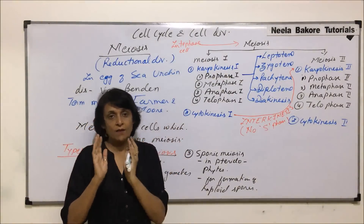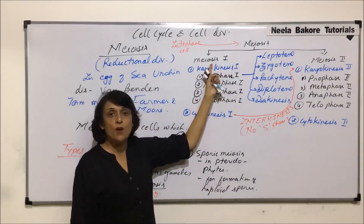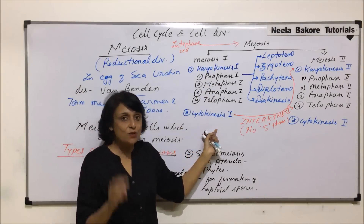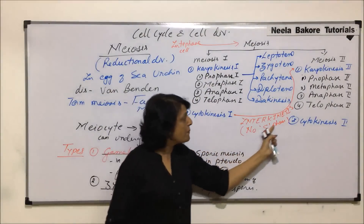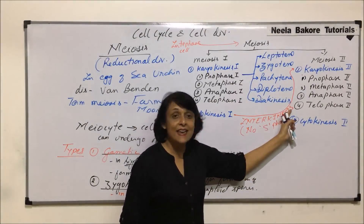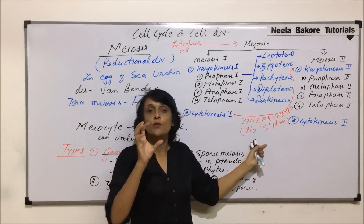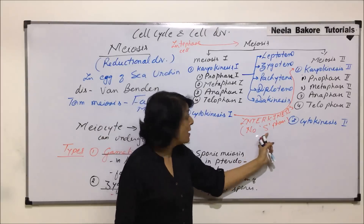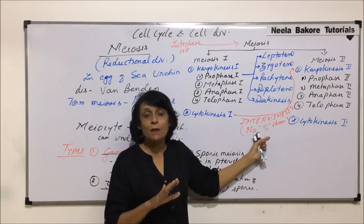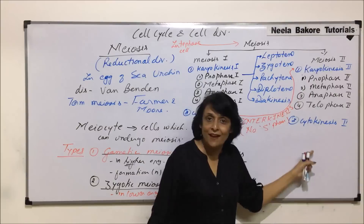So a cell does interphase, prepares itself, comes into meiosis, goes through meiosis I and all its stages, divides into two daughter cells. Then it prepares itself for a very short period of time, which is known as interkinesis — only a little bit of growth and preparation, but there is no S phase. That means DNA replication does not take place again. Now the cell gets into meiosis II and divides.